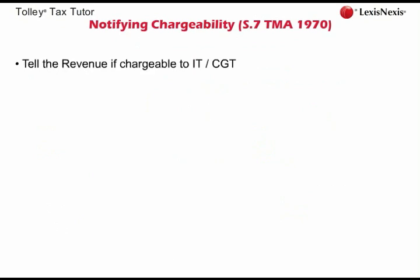Before we get into the nitty-gritty of self-assessment, let us look at the requirement to notify chargeability to income tax or CGT. The basic idea is that if you become chargeable to income tax or capital gains tax for the first time, you need to write to HMRC and inform them that you exist. Keeping a low profile and earning income without paying any tax is a serious offence under tax law and can carry a stiff penalty. If an individual becomes chargeable, he has a duty to notify HMRC within six months of the end of the tax year in which he became chargeable.